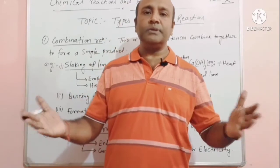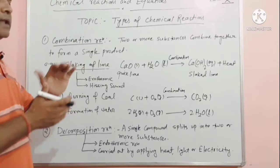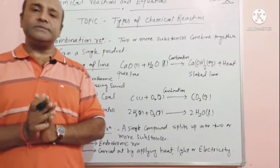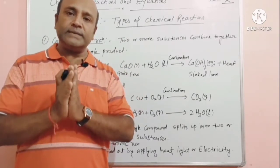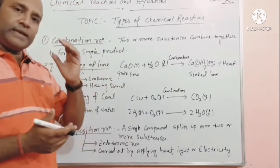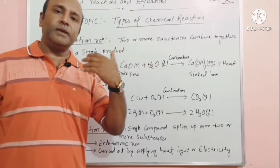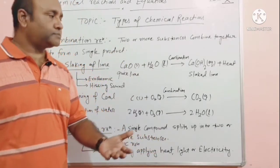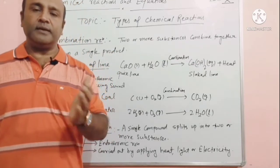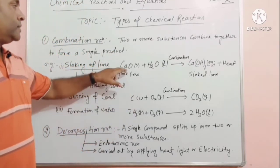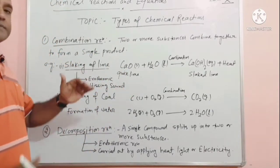During slaking of lime, calcium hydroxide is formed. Another name of calcium hydroxide is slaked lime. Calcium oxide reacts with water to form calcium hydroxide. The product of slaking of lime is calcium hydroxide, also called slaked lime. Calcium oxide is also known as quick lime.